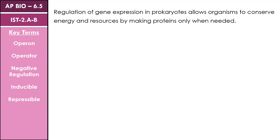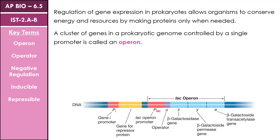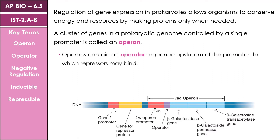For our intents and purposes, we are going to focus on some of those negative regulation mechanisms within prokaryotic cells. Remember that regulation of gene expression in prokaryotic cells allows them to conserve energy and resources by making proteins only when they are absolutely needed by the cell. Let's take a closer look at gene sequences along the prokaryotic genome. Prokaryotic genes are typically controlled by a single promoter, which we call an operon. Operons contain an operator sequence upstream of our promoter to which repressors may bind. Because we're dealing with repressors, we identify this as a negative regulatory mechanism. We have a few different types of operons depending on whether the repressor is bound or unbound in order to turn off that gene.